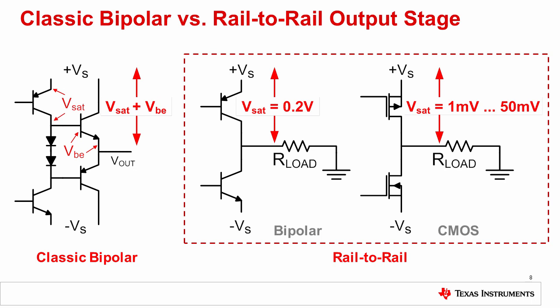Up to this point, we have discussed the classic bipolar output stage, which is usually limited to a volt or more away from the supply rail. As we've previously shown, the sources of the limitation are the VBE and VSAT of the output transistors. Notice that the classic stage uses a common emitter configuration. The rail-to-rail output stage, on the other hand, can swing very close to the supply rail. In the case of the bipolar rail-to-rail output stage, the output swing limitation comes from the VCE saturation voltage, which is about 0.2 volts for most transistors. The CMOS rail-to-rail output stage can swing much closer to the rail, as the VSAT is lower, typically from 1 to 50 millivolts. The actual VSAT of the CMOS stage is dependent on output transistor sizing, so very low VSAT can be achieved with large output transistors.